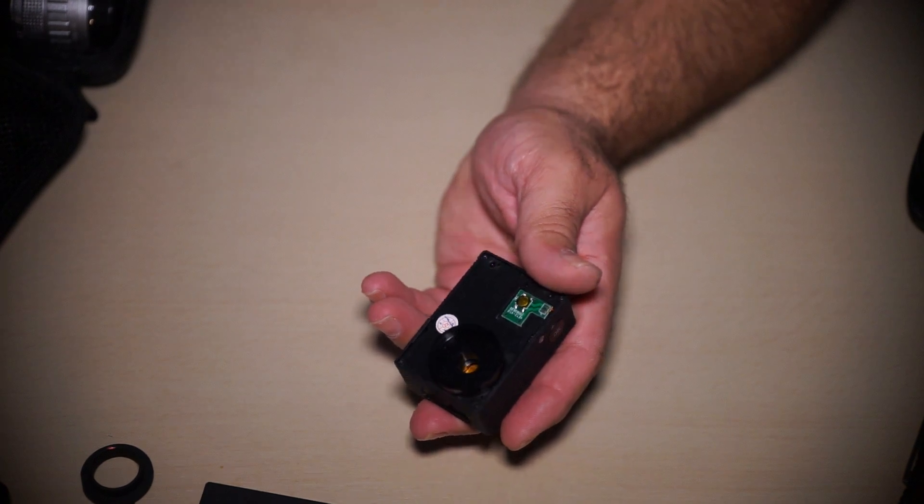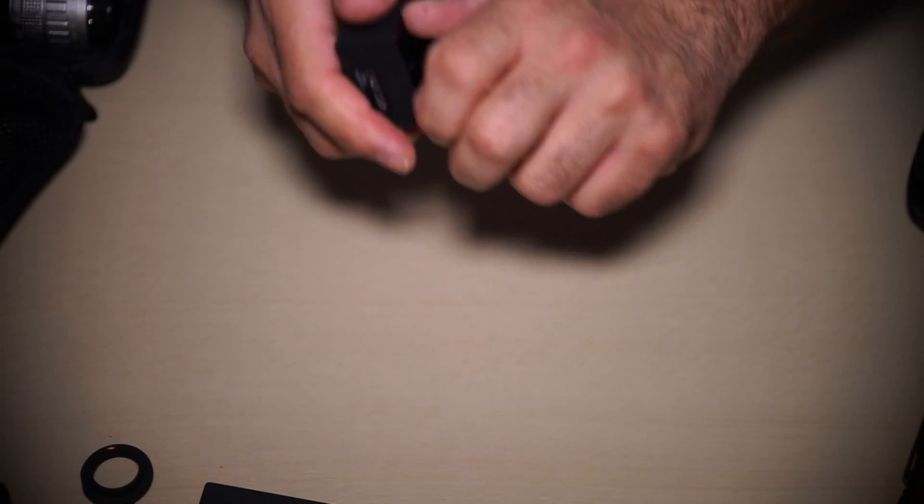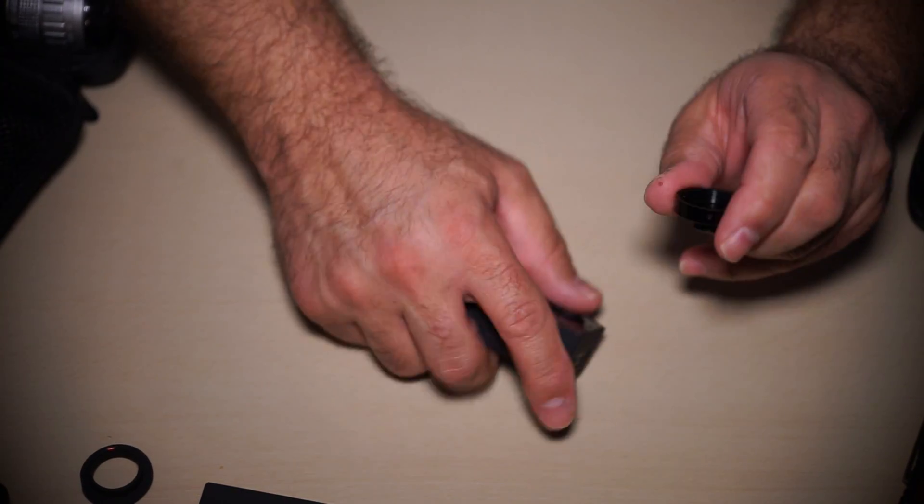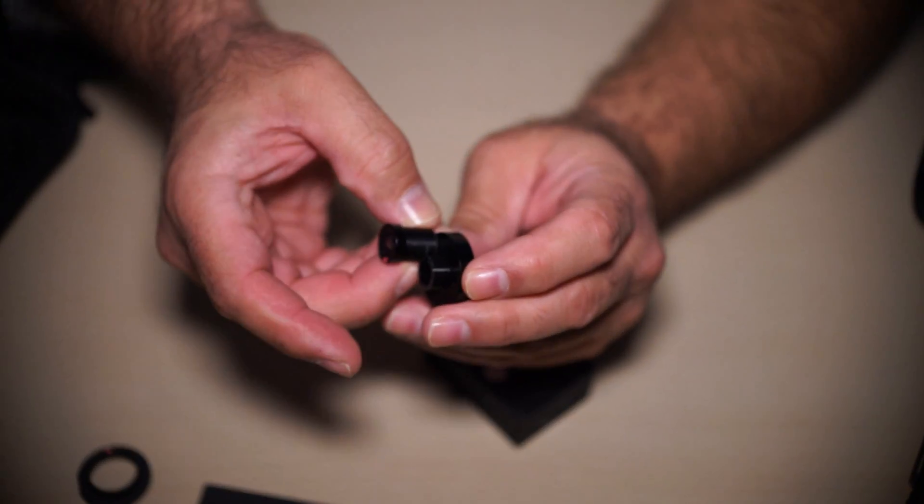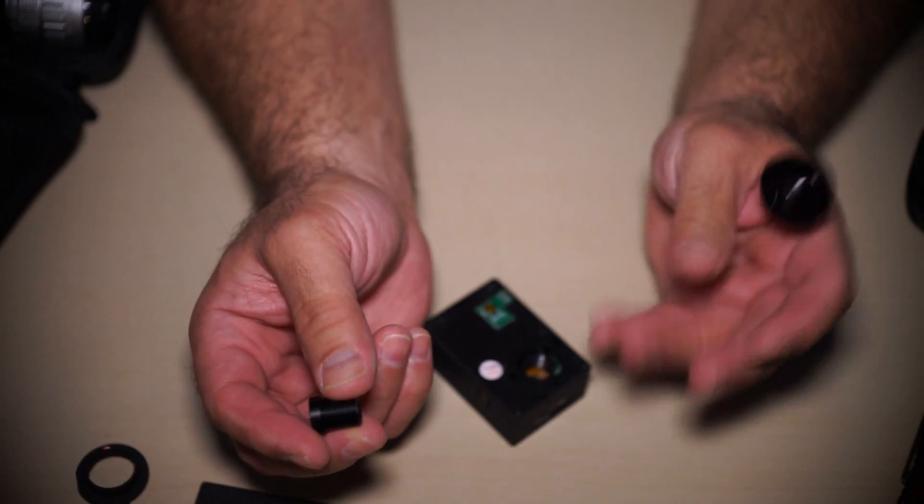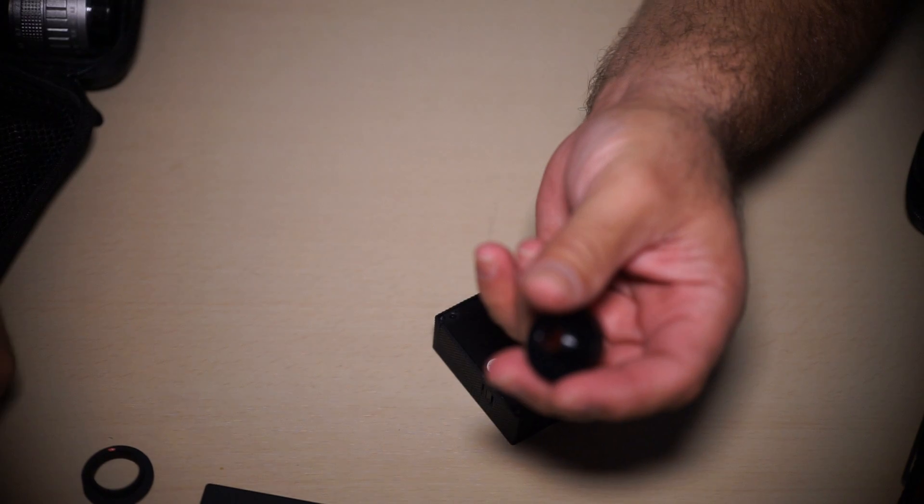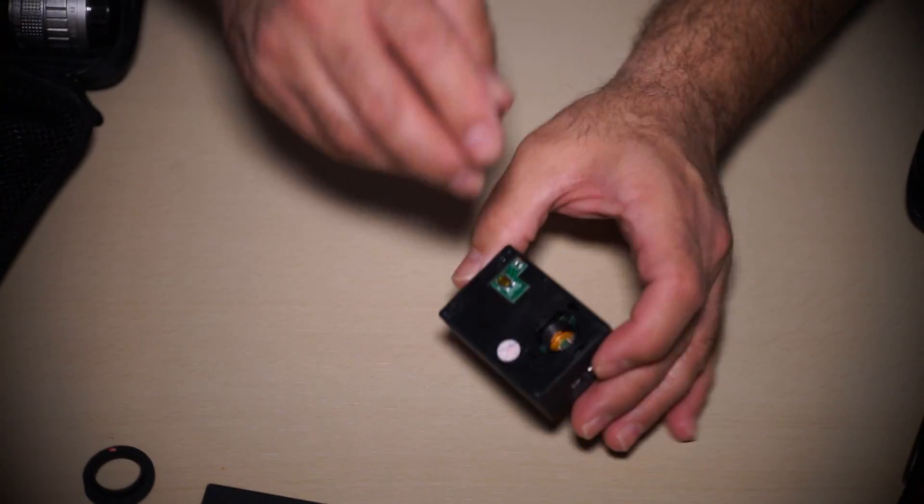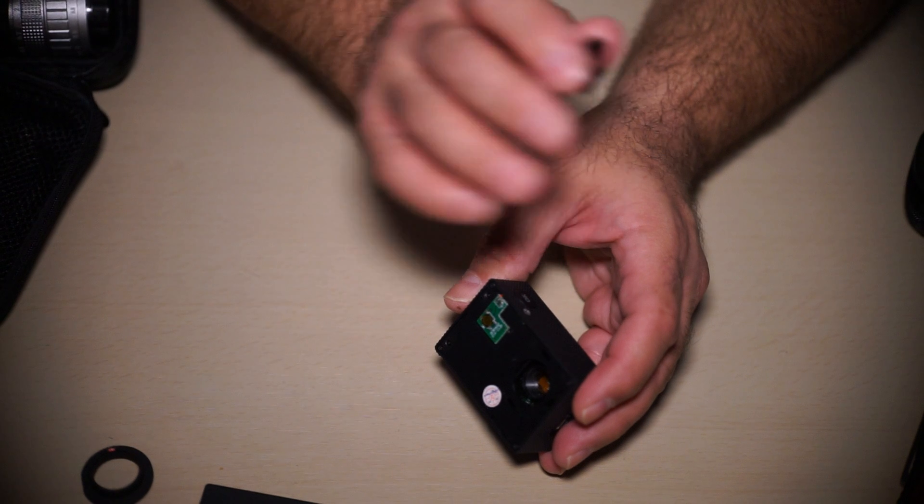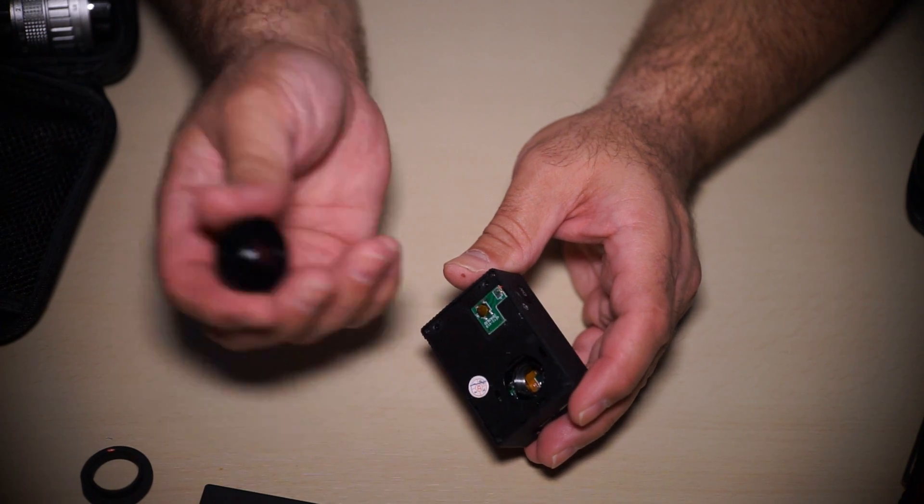Oh my goodness. Okay. If you look, the threads on this are much, much longer. So this lens goes much deeper into the camera. This doesn't go as deep. So the focal length or the focal distance from the sensor to the lens isn't going to be the right dimension more than likely. But I'm just doing this to take a chance.